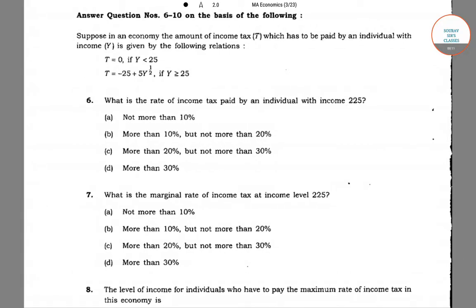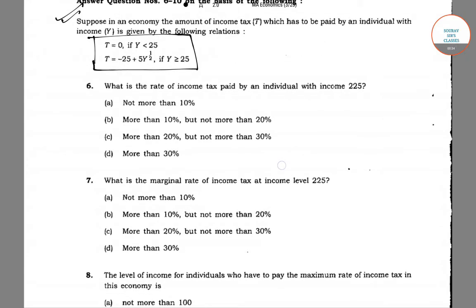As we have previously solved question number 6, you can see here the main problem: when income is less than 25 you are paying no taxes, that is t equals 0; and when income is greater than or equal to 25, you are paying a tax equal to minus 25 plus 5 into y to the power half. In question number 7, it is asked: what is the marginal rate of income tax at income level 225?